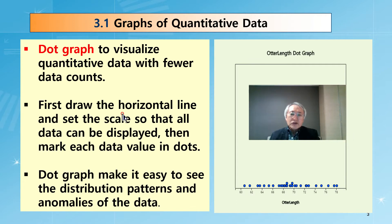First, if there are data, you draw the horizontal line like this. Draw the horizontal line and set the scale so that all data can be displayed. It means check the minimum, check the maximum, and give them scale around here, then plot it. Each data represents a single dot.